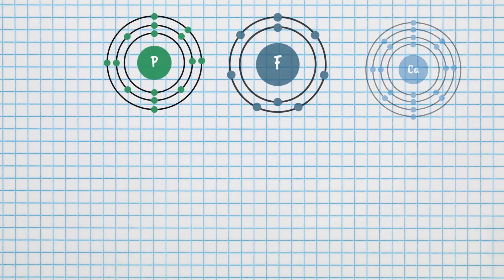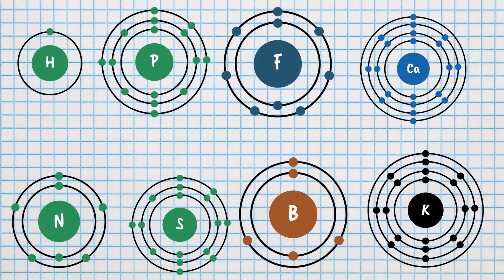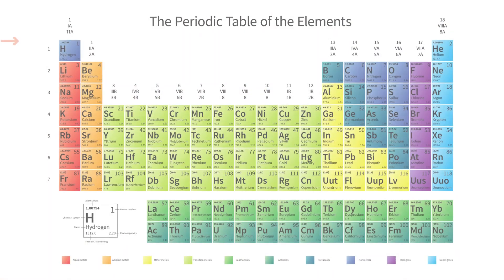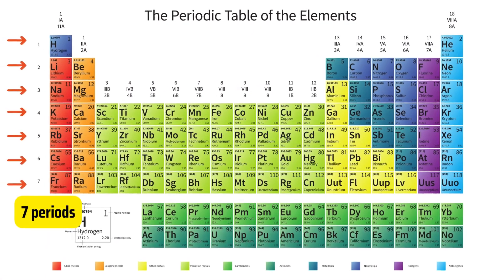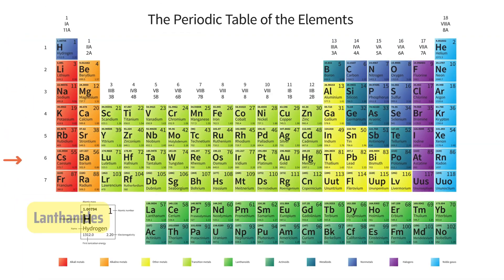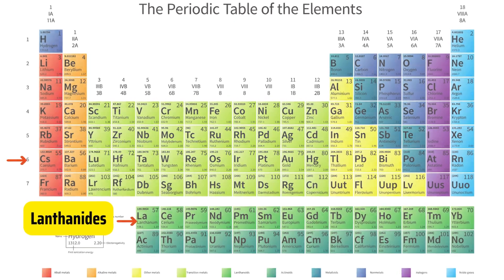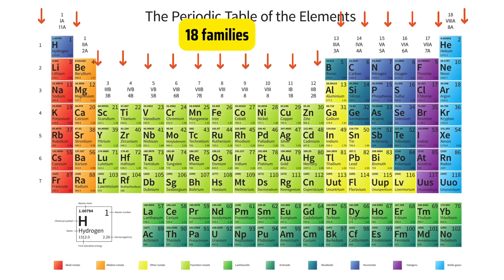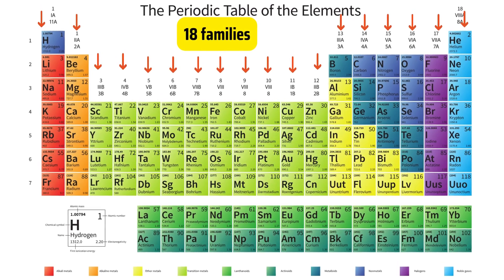To understand the electron shell model, let us first understand the layout of the periodic table. The periodic table has seven periods which are the seven horizontal rows. The lanthanides are part of period 6 and the actinides are part of period 7. There are 18 groups or families which are the vertical columns.